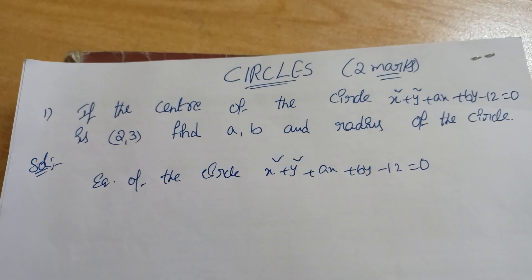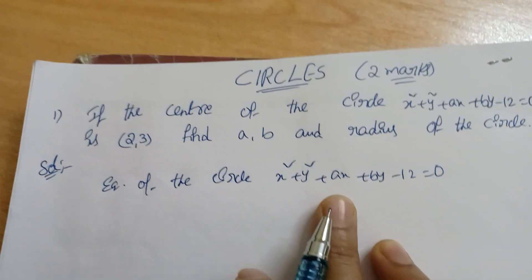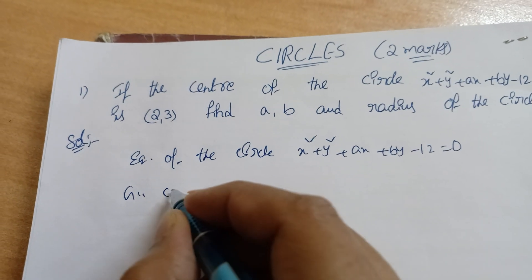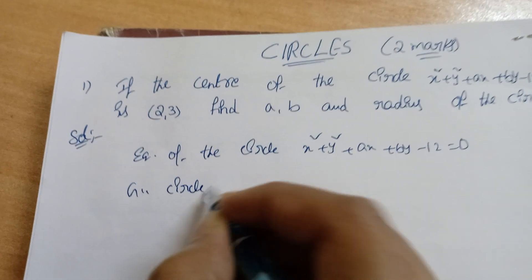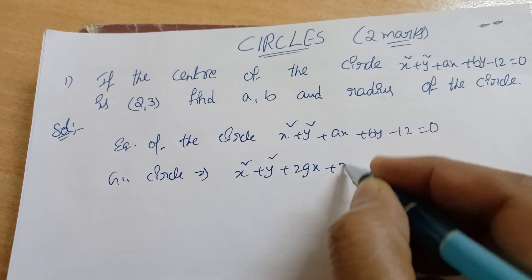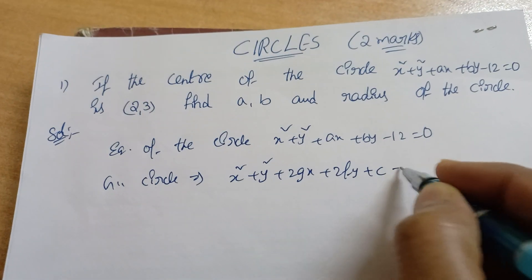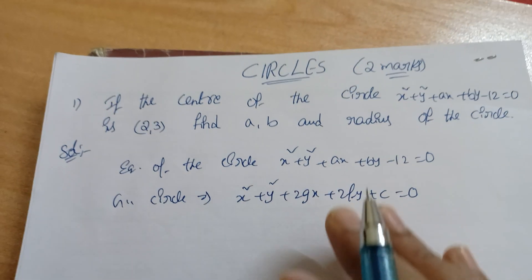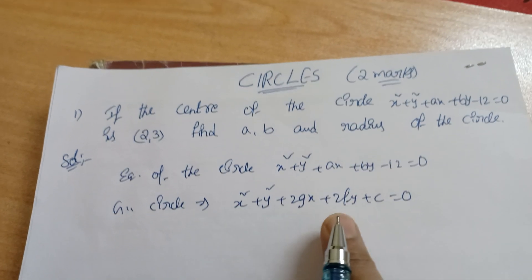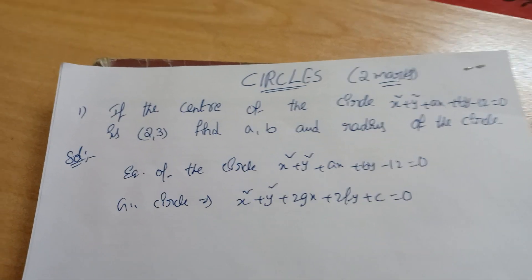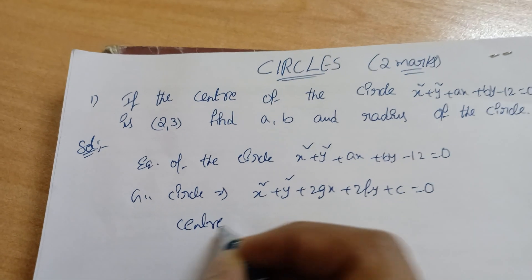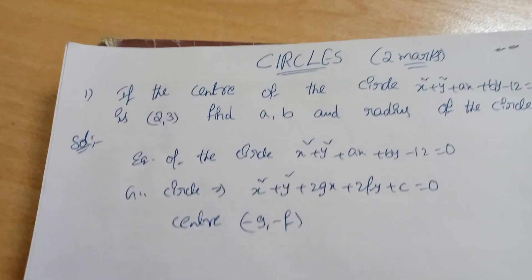Now compare with the general equation of a circle: x² + y² + 2gx + 2fy + c = 0. Comparing coefficients: the x coefficient gives 2g = a, and the y coefficient gives 2f = b. The center in the general equation is (−g, −f).